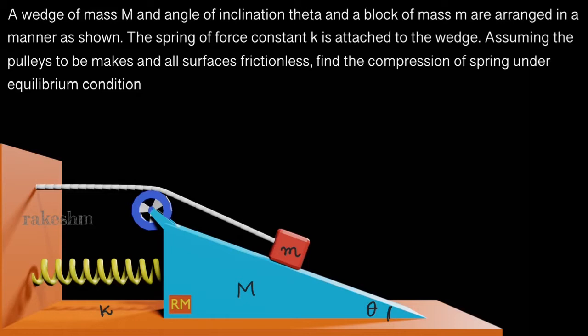There is another block of mass small m arranged in a manner as shown. This is a block here of mass small m and it is placed on the wedge and it is connected to the wall through a rope as shown.